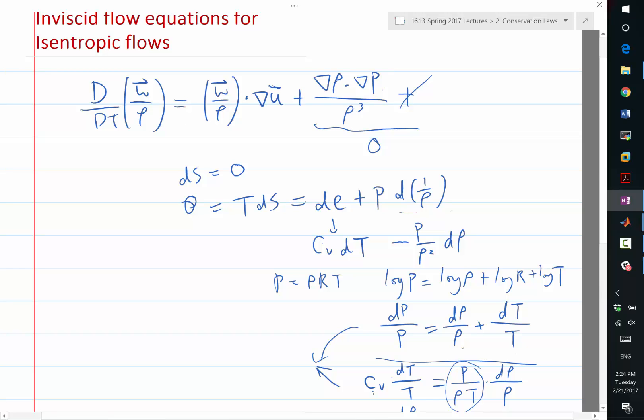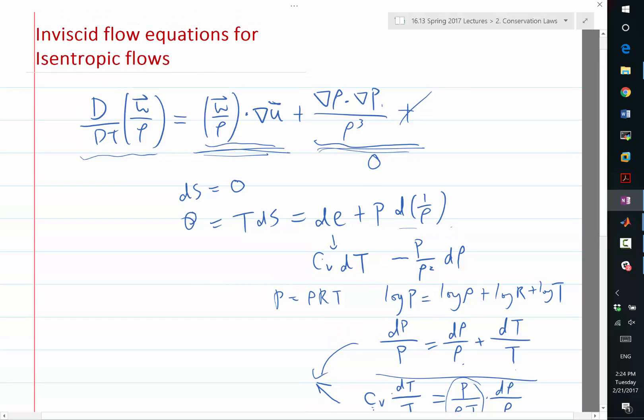Now the only term remaining is this vorticity stretching. And if we know that omega started with zero, then we know that there is no vorticity being produced either by stretching or by baroclinic torque. And if we assume in addition it is inviscid, that means d/dt of omega divided by rho equals zero. So the inviscid flow equation for isotropic flows is basically omega equal to zero.